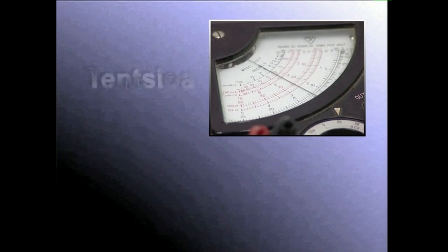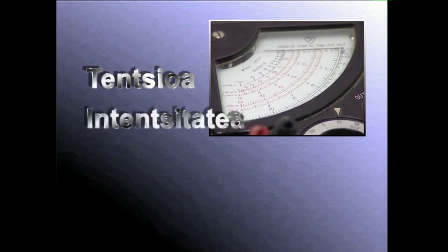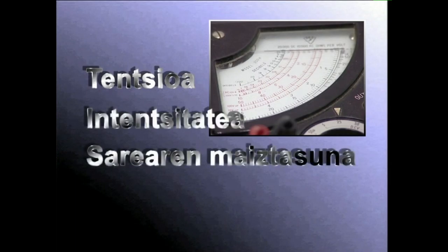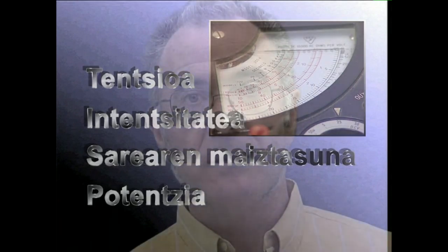Teknologia elektrikoak lau parametro hartzen ditu oinarritzat: tentsioa, intentsitatea, sarearen maiztasuna eta potentzia. Ikus ditzagun lau parametro horien ezaugarriak, gero argiztapenak egiterakoan kontuan izateko.